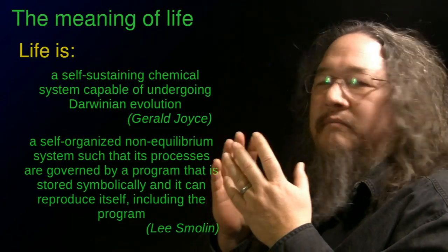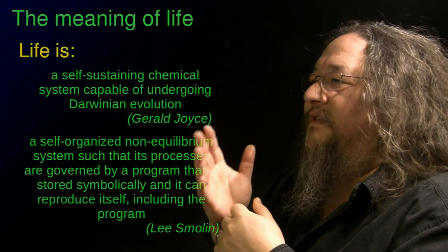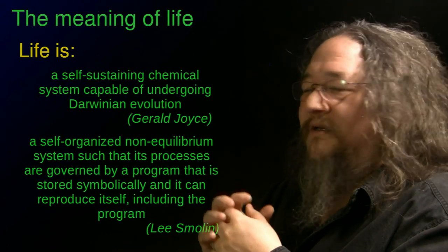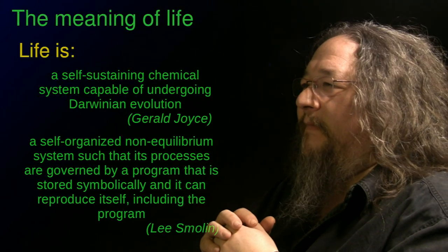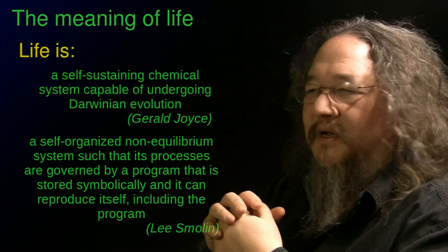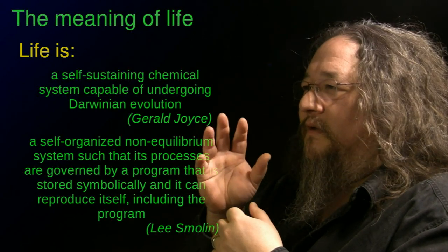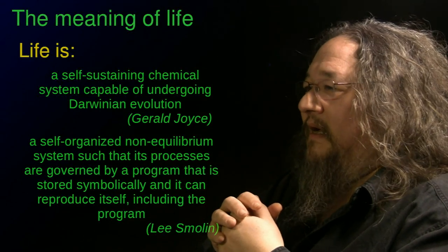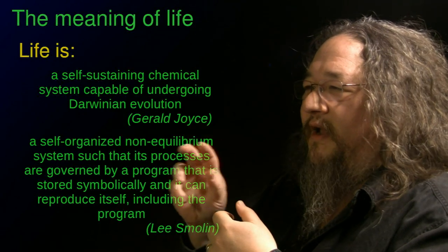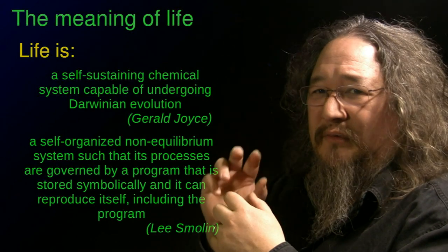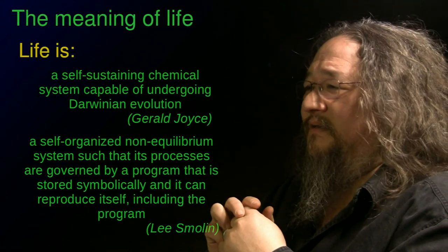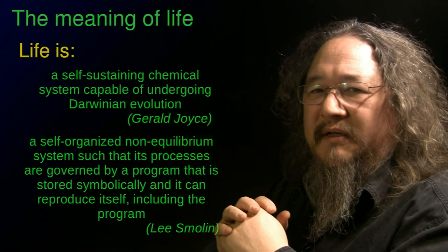Many people have taken cracks at coming up with such a definition. Here are two: 'A self-sustaining chemical system capable of undergoing Darwinian evolution,' and 'A self-organized non-equilibrium system, such that its processes are governed by a program, stored symbolically, and can reproduce itself.' Both talk about systems doing something on their own — sustaining, organizing. Gerald Joyce is a chemist, and Lee Smolin is a physicist. When I, as a computer person, see the word 'program' and especially 'symbolically,' those are red flags. I want to boil it away and make it as simple as I possibly can.